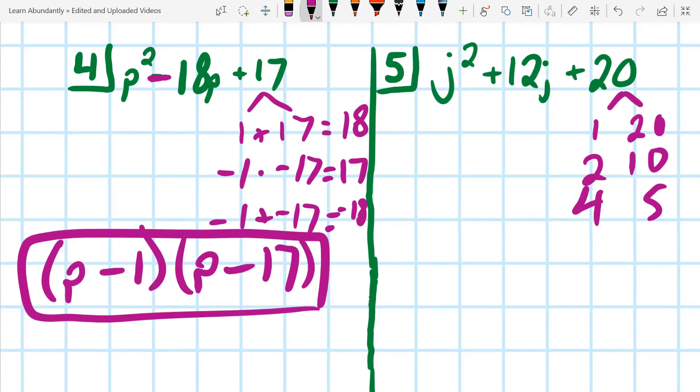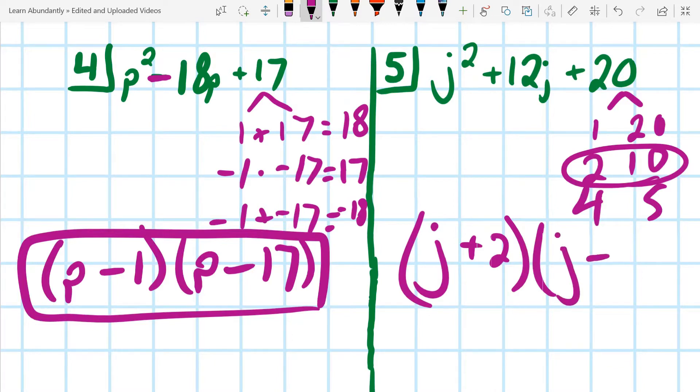1 and 20, 2 and 10, 4 and 5. I guess I could do 5 and 4, but we kind of repeat after that point. Hopefully, we can tell that this pair is the pair that adds to 12. So my answer is, oops, not Y. If you get the variable wrong, it's still wrong. J plus 2 and J plus 10.